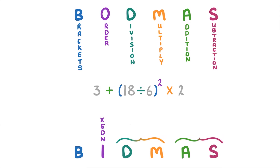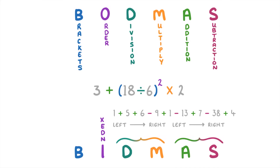One important thing: when it comes to division and multiplication, or addition and subtraction, you should start with the ones on the left and work your way to the right. So if you have a question with loads of pluses and minuses, you just start on the left and work through — you wouldn't do all the additions before the subtractions.